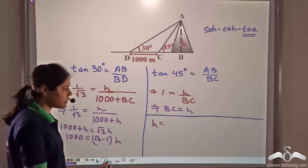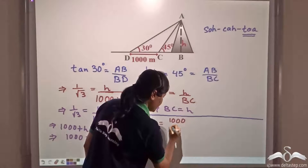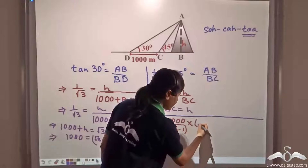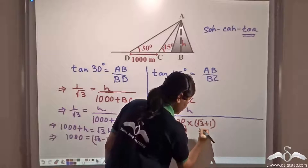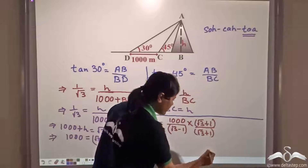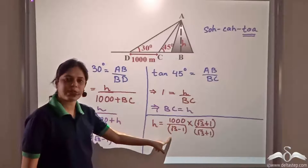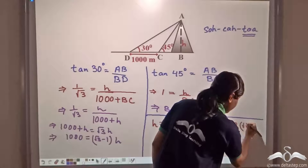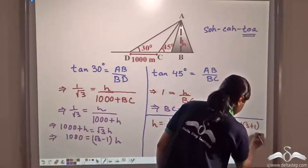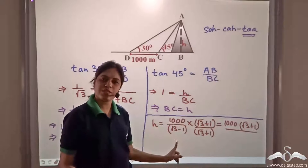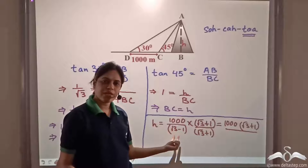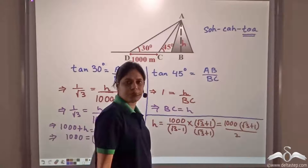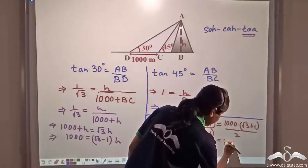Now let's rationalize it. We multiply numerator and denominator by root three plus one over root three plus one. So we get one thousand times root three plus one in the numerator. Using the identity (a minus b)(a plus b) equals a squared minus b squared, root three squared is three and one squared is one, so three minus one is two in the denominator. Two and one thousand simplify to give five hundred times root three plus one.